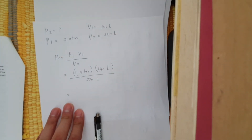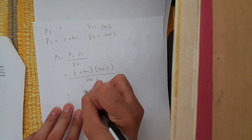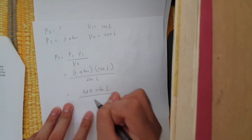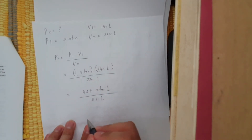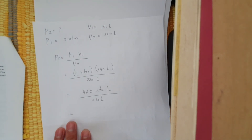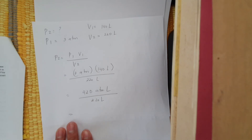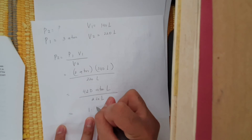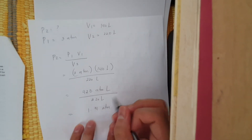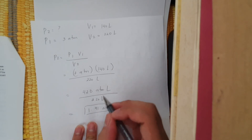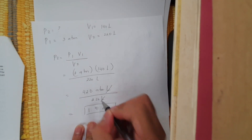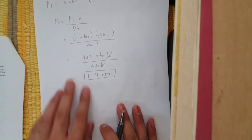So 3 multiplied to 140 is 420, and then 420 divided by 220 is approximately 1.91. So we get 1.91 atmospheres. Cancel the same unit — so that is how you compute for the final pressure.